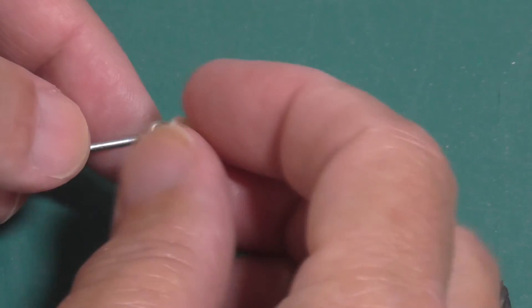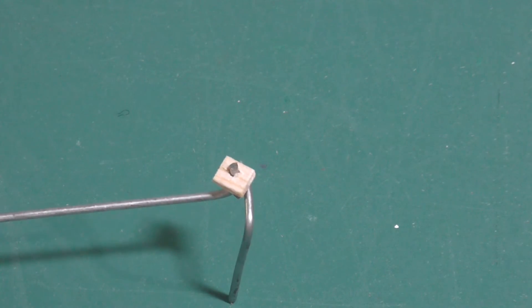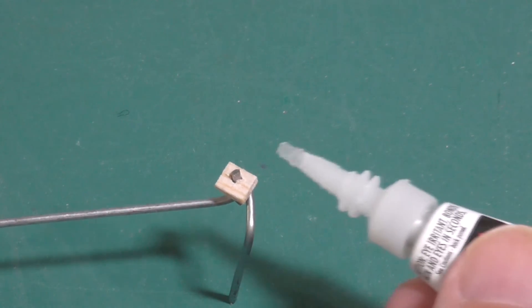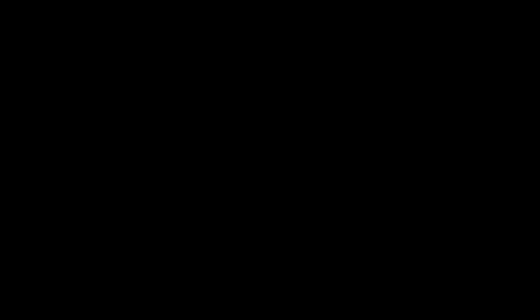To hold it in place, use a dab of superglue. If a bit of glue seeps and fastens the two bars together, you can simply break them free.